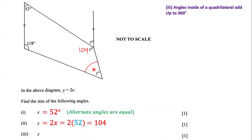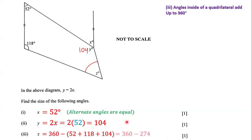To figure out the size of angle z, we add 104, 52, and 118, then subtract that sum from 360 degrees. We have 360 minus the sum of 52, 118, and 104, which is 360 minus 274. When we subtract, we get 86. So the size of angle z is 86 degrees. And that's our answer to this question.